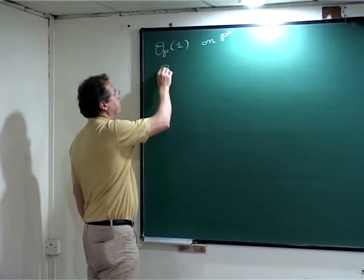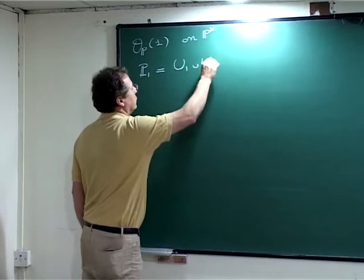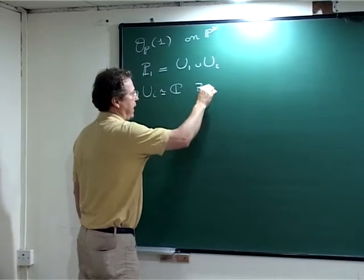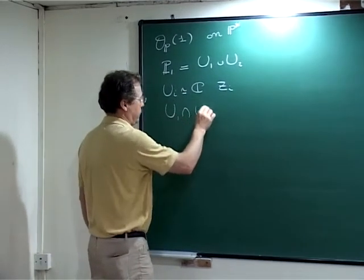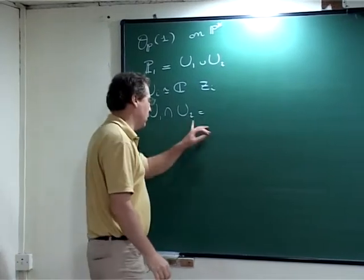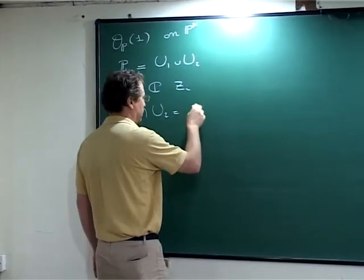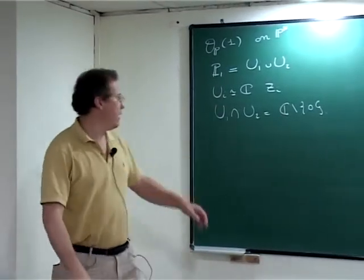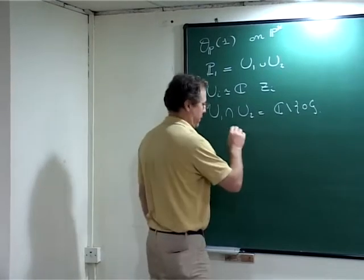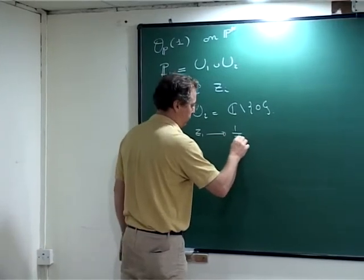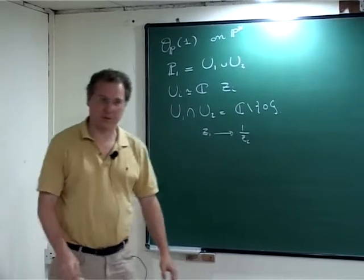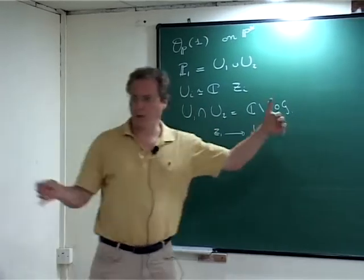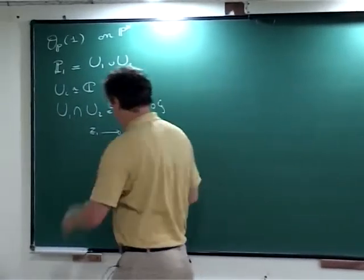On P1, as usual, is U1 union U2, where U_i is isomorphic to C with coordinates Z_i. And U1 intersection U2 is equal to G_m, to C minus 0, and the way these two things are glued together is sending Z1 to 1 over Z2. This is the explicit description of P1, and you may make the exercise to do the explicit description of P^N. You will have many coordinates, and they are glued together by similar laws.